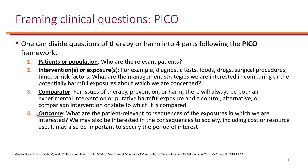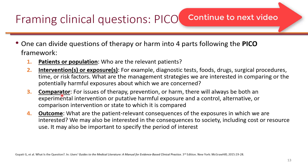In a question of harm, you should still define the relevant patients. But instead of an intervention group, you will have an exposure group — those are the patients that are exposed to the harm. Then you will have a comparator group, which would be either your control group or an alternative. And of course, you will look at the outcome.